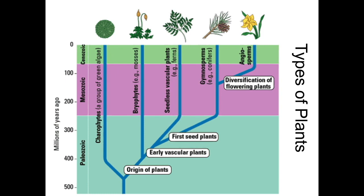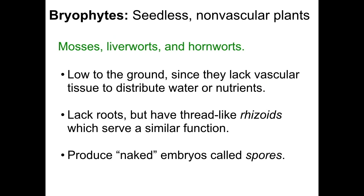We're going to take a survey of different kinds of plant species, starting with the bryophytes. Bryophytes are seedless, non-vascular plants — they do not have vascular tissue, seeds, or flowers. Representatives include mosses, liverworts, and hornworts. Bryophytes tend to be low to the ground. Since they lack vascular tissue, they have no way of distributing water or nutrients other than through osmosis — water is transferred from one cell to the next. Bryophytes also lack roots, but instead have thread-like structures called rhizoids that serve a very similar function. Bryophytes produce what we describe as naked embryos, meaning embryos without very complex coverings. These naked embryos are called spores.